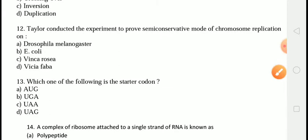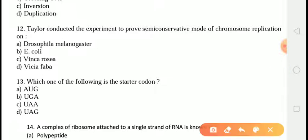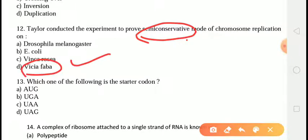The next question is: Taylor conducted an experiment to prove the semi-conservative mode of chromosome replication on which organism? The correct answer is answer D, that is Vicia faba — this question comes very frequently. The common name of Vicia faba is broad bean.